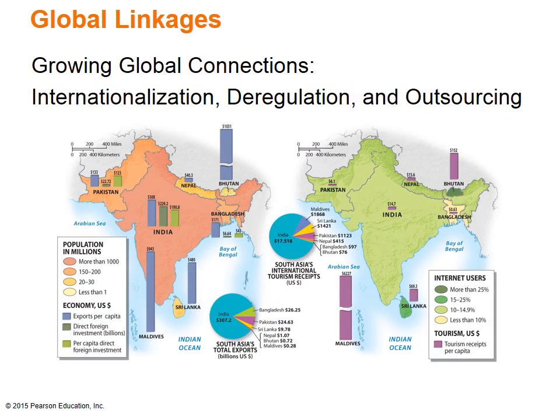Despite South Asia's rapidly growing global connections, the region as a whole is still relatively self-contained and not the world's most globalized region, especially in regard to finance. Internet use remains low, especially in Bangladesh and Nepal. The two maps show exports, direct foreign investment, internet use, and tourism as global linkages. However, outsourcing has become a big advantage to many firms and is on the rise.